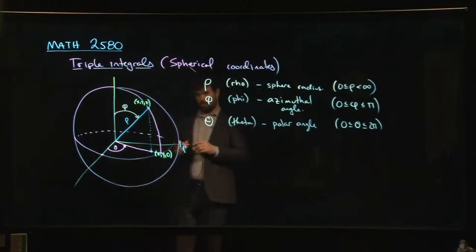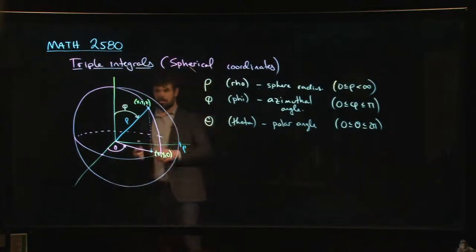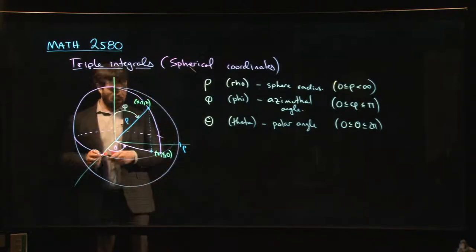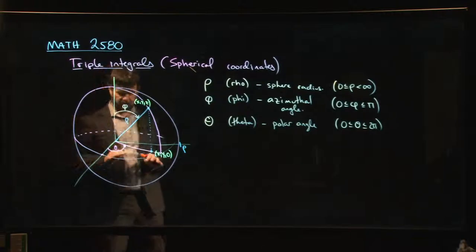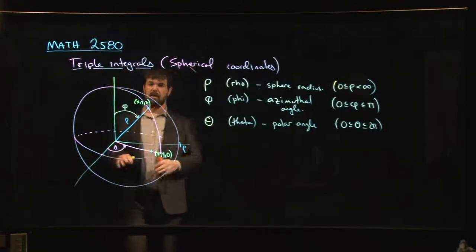That is this equatorial angle measured from here around to here. And then you have this sort of azimuthal angle kind of coming up right through the point like so. So that's your polar coordinate system.